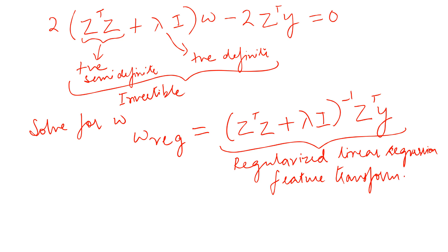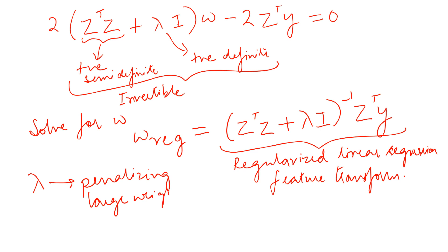The 'regularized' comes from the regularization parameter — we get to pick that. Higher the value of lambda, the smaller the weights you get. So you can control the weights by penalizing large weights through lambda. We call this a feature transform because we are in the Z space, keeping things as generic as possible. This is the final expression for the weights required.